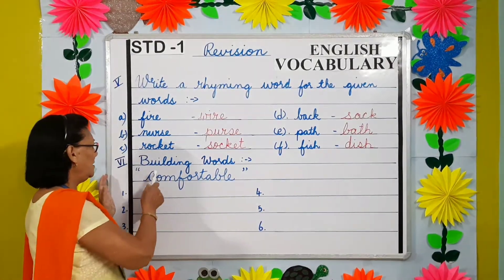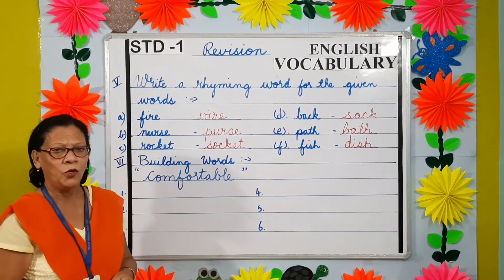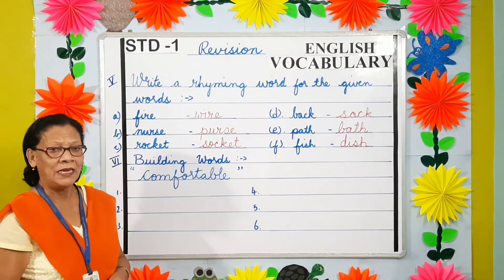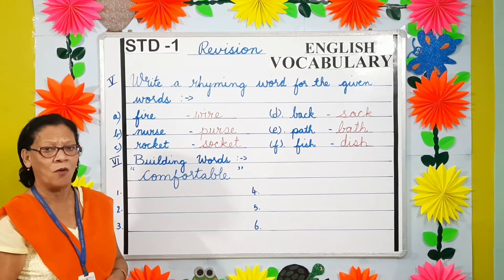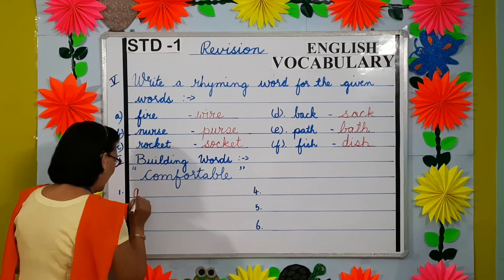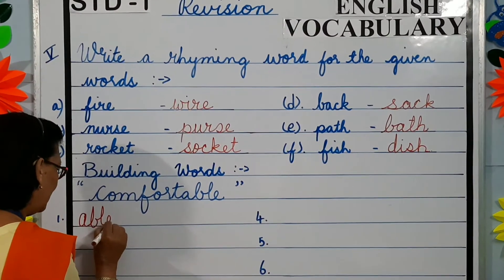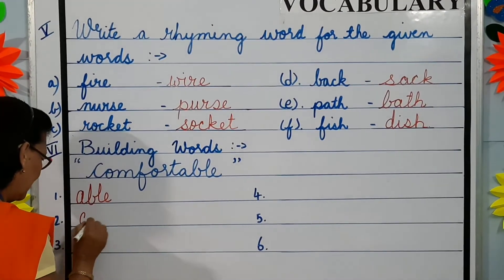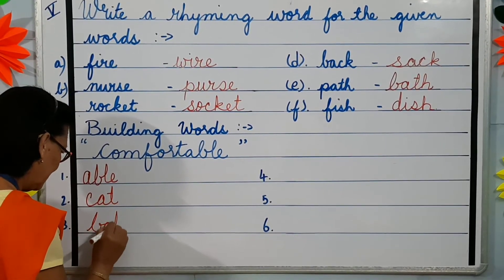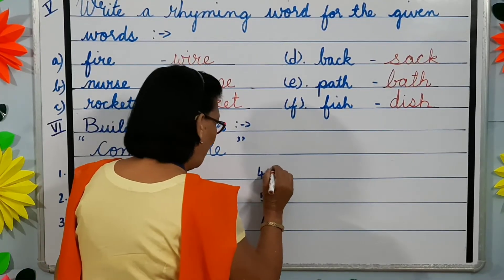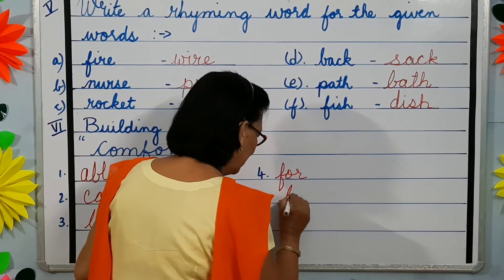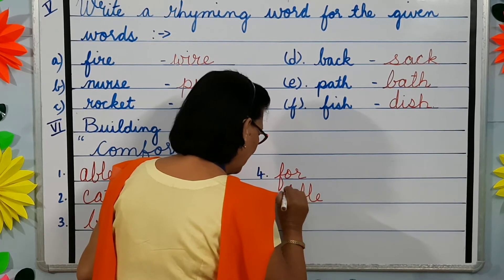The last question is building words. You have to make new and meaningful words from the given word 'comfortable'. Each new word must have three or more letters. For example: able, bat, for, table, come.